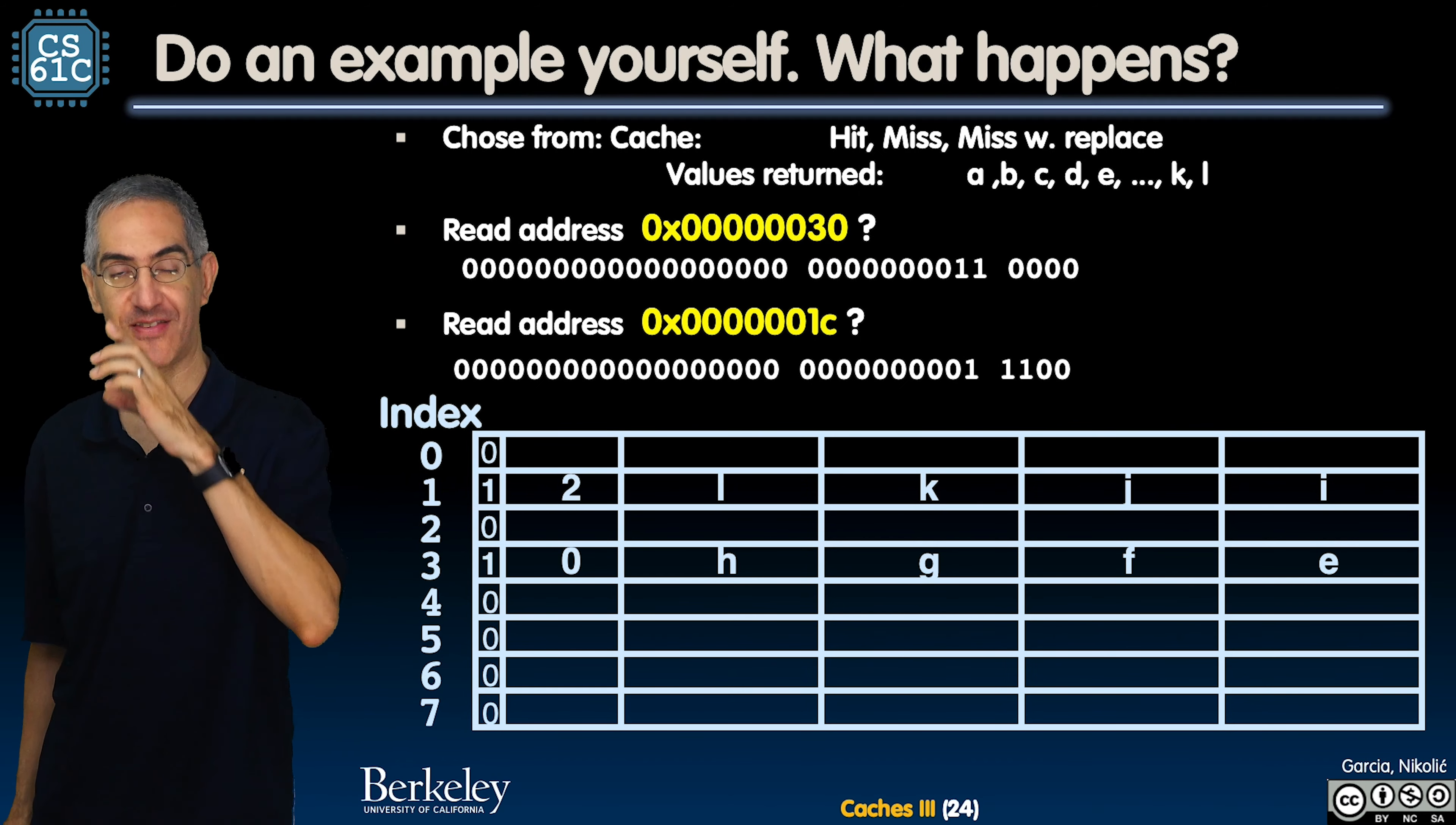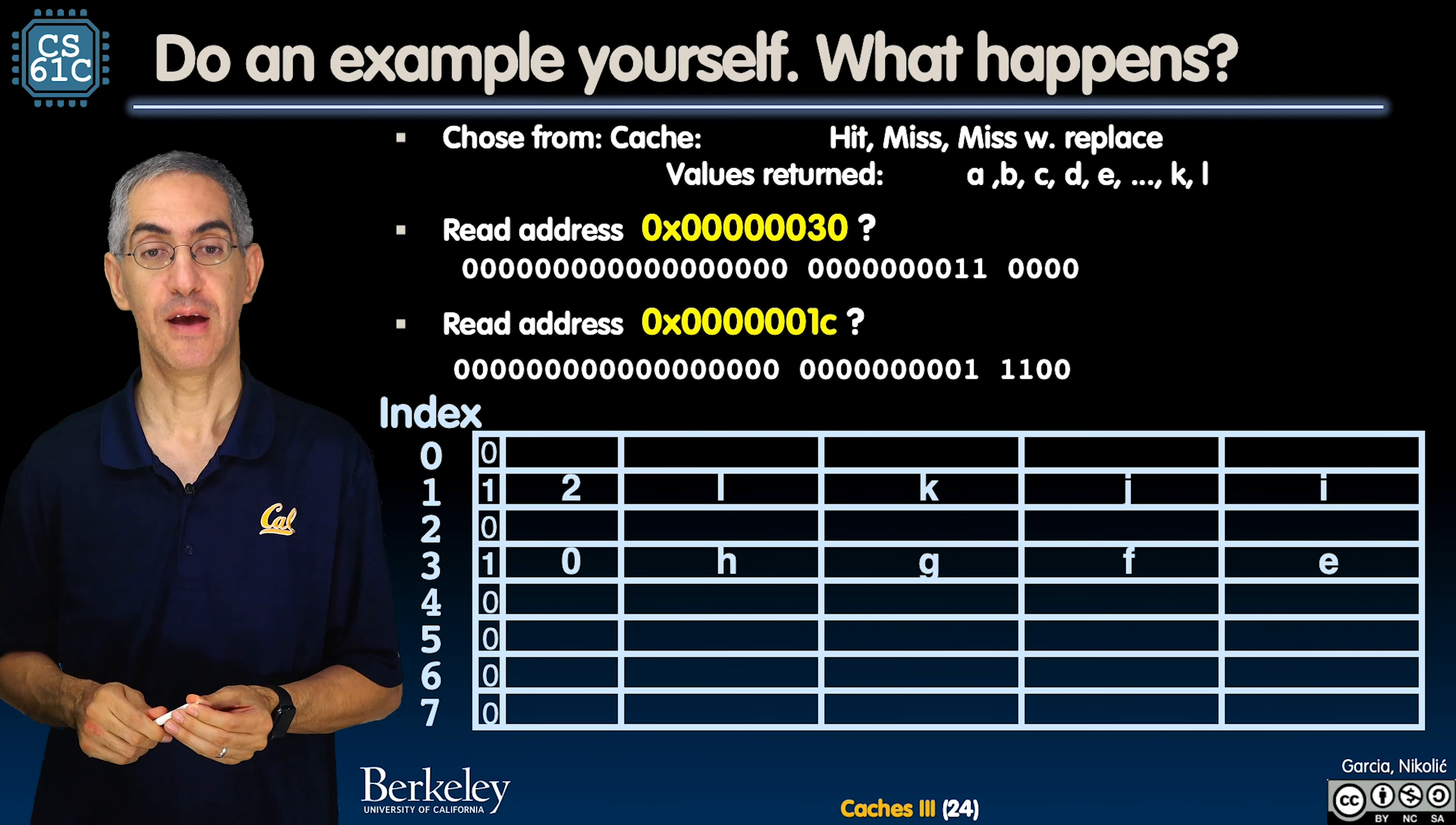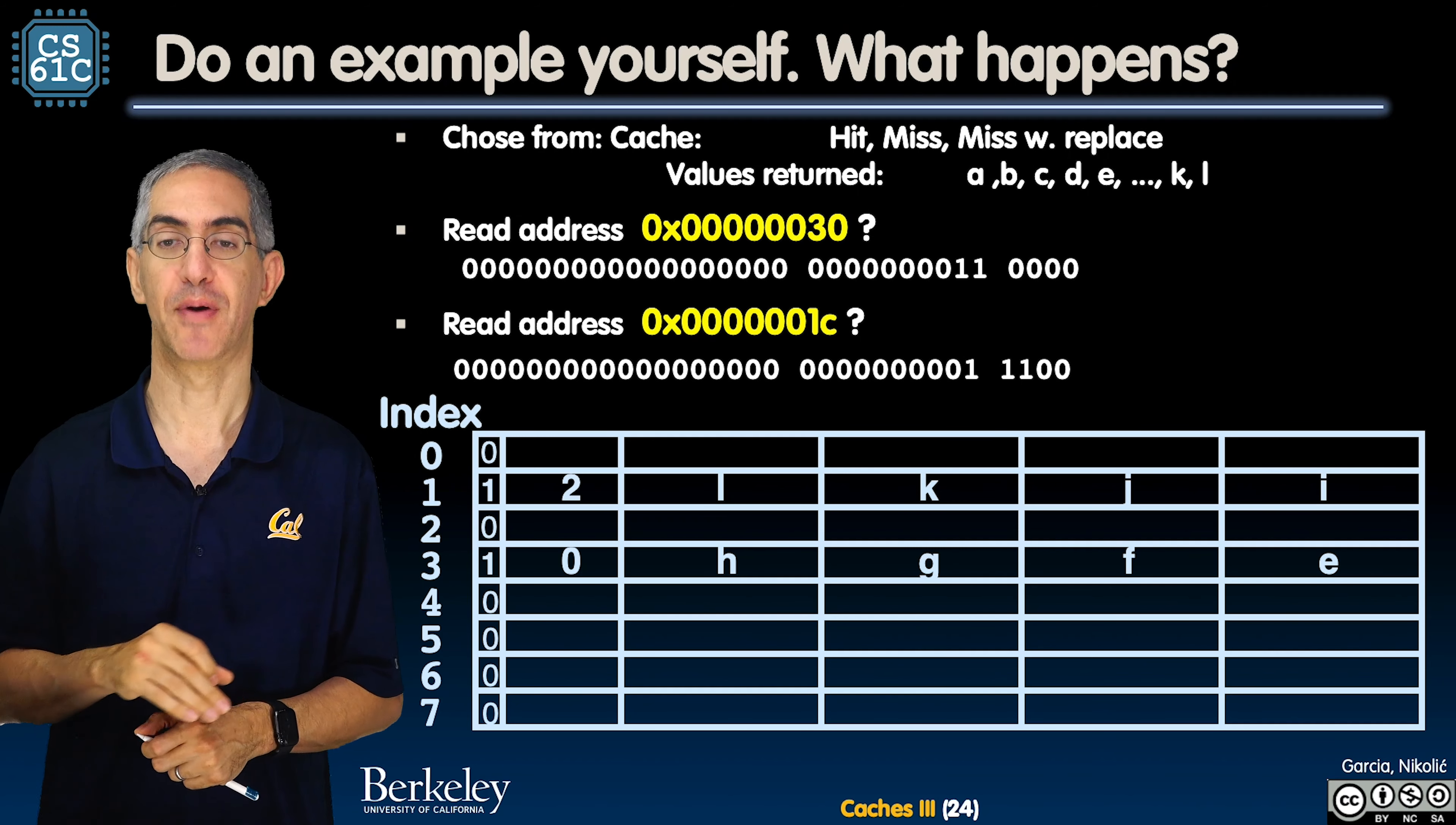This is one of those cases, almost like a clicker pair instruction question. What if I gave you, and the values could be A, B, C, D, E, up to J, K, L, and I'm going to ask you, what if you read at 30 and at address 1C? So I really encourage you, it's very strongly to pause it right now. Pause the video. Try to do a read of address at 30 and read it address 1C. And we'll come back in a second.